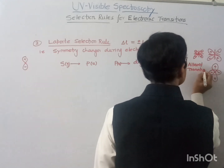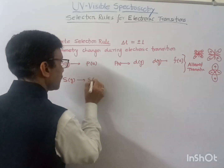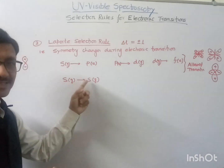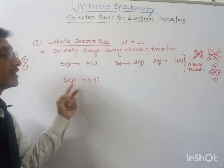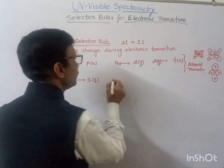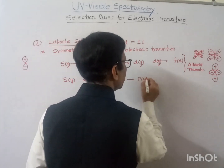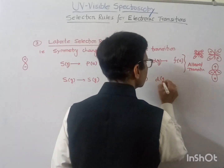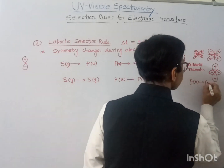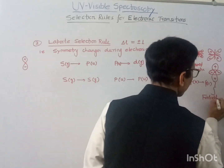In contrast, transitions where symmetry remains the same are forbidden. For example, s to s, p to p, d to d, and f to f transitions are all not allowed — such as 1s to 2s — because the symmetry remains the same throughout. These are all forbidden transitions.